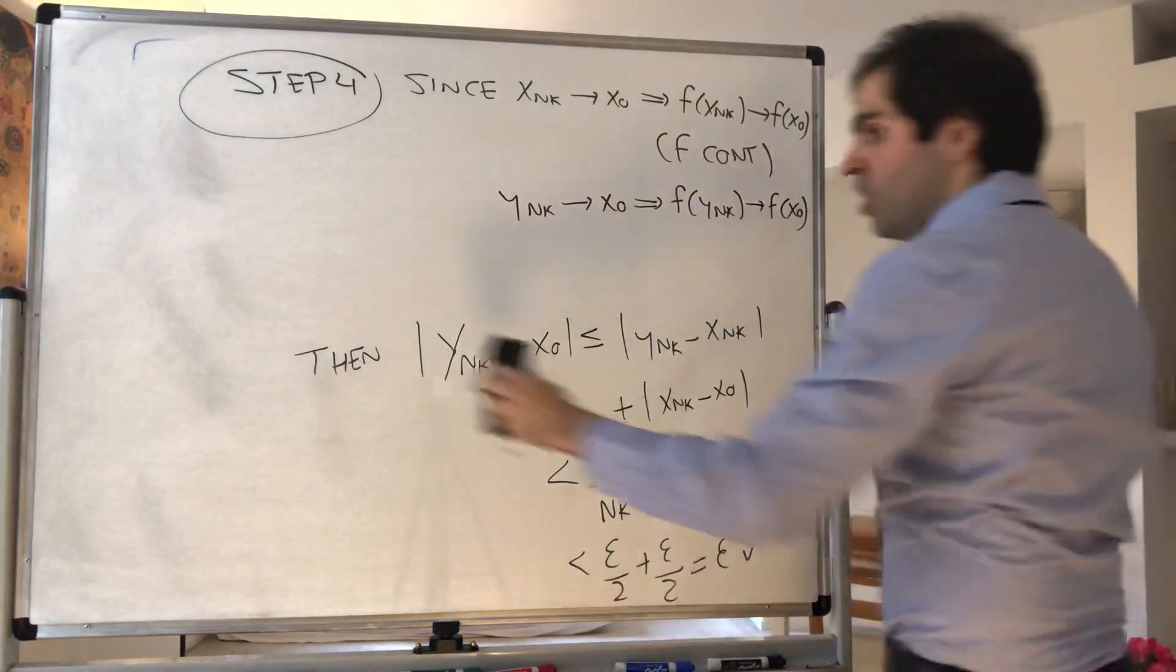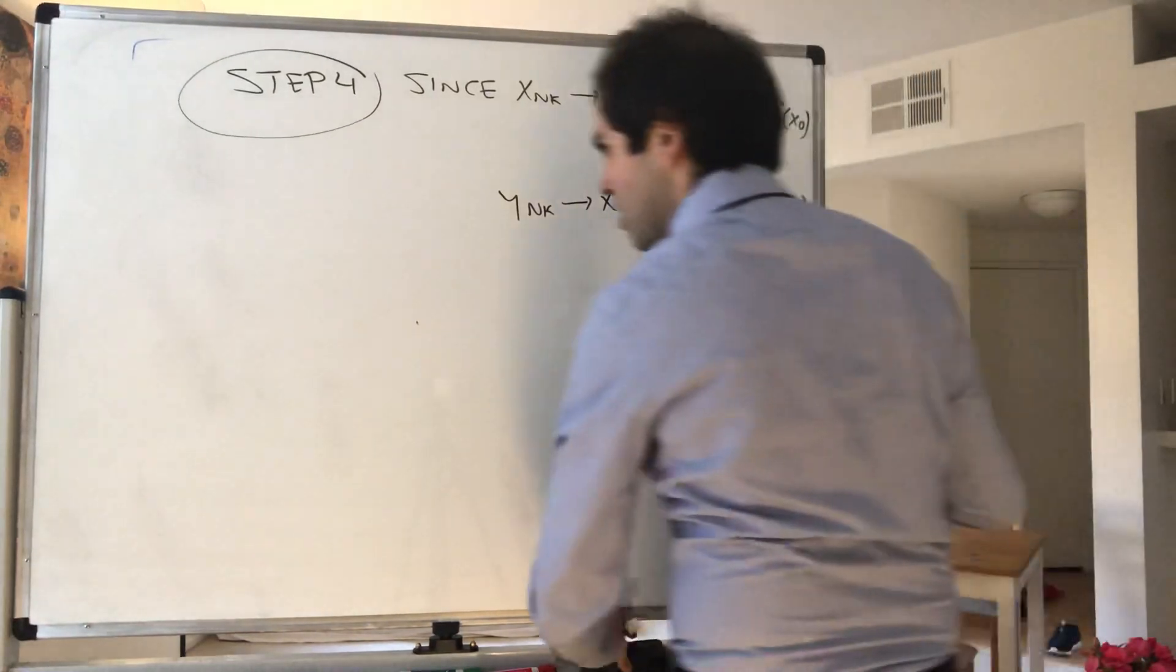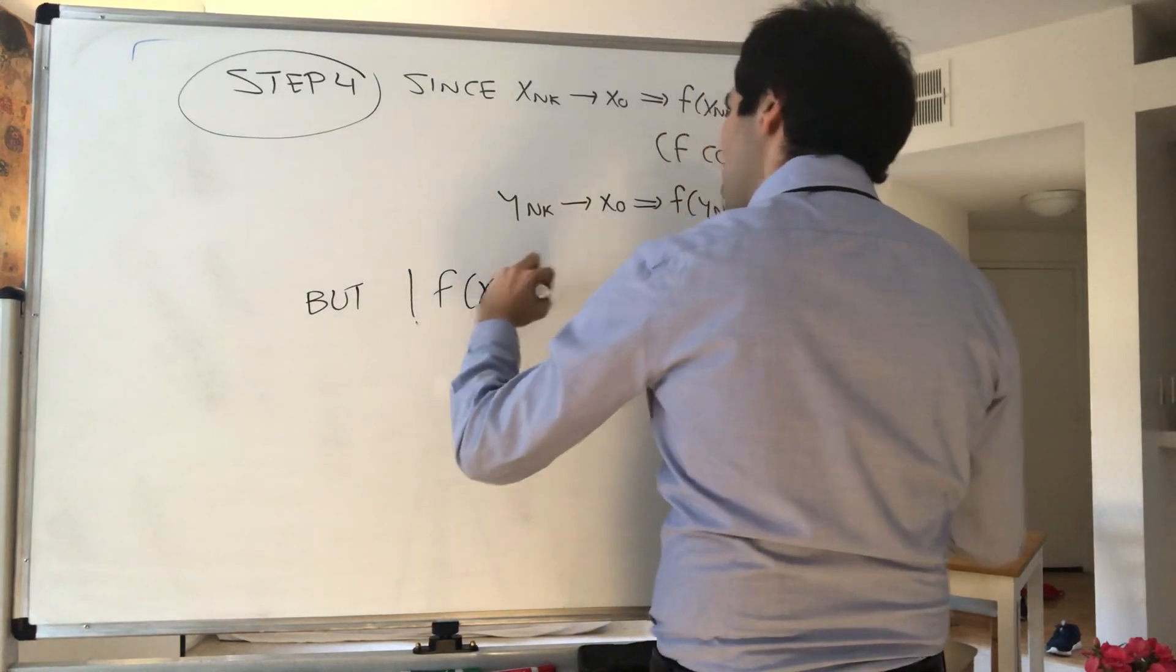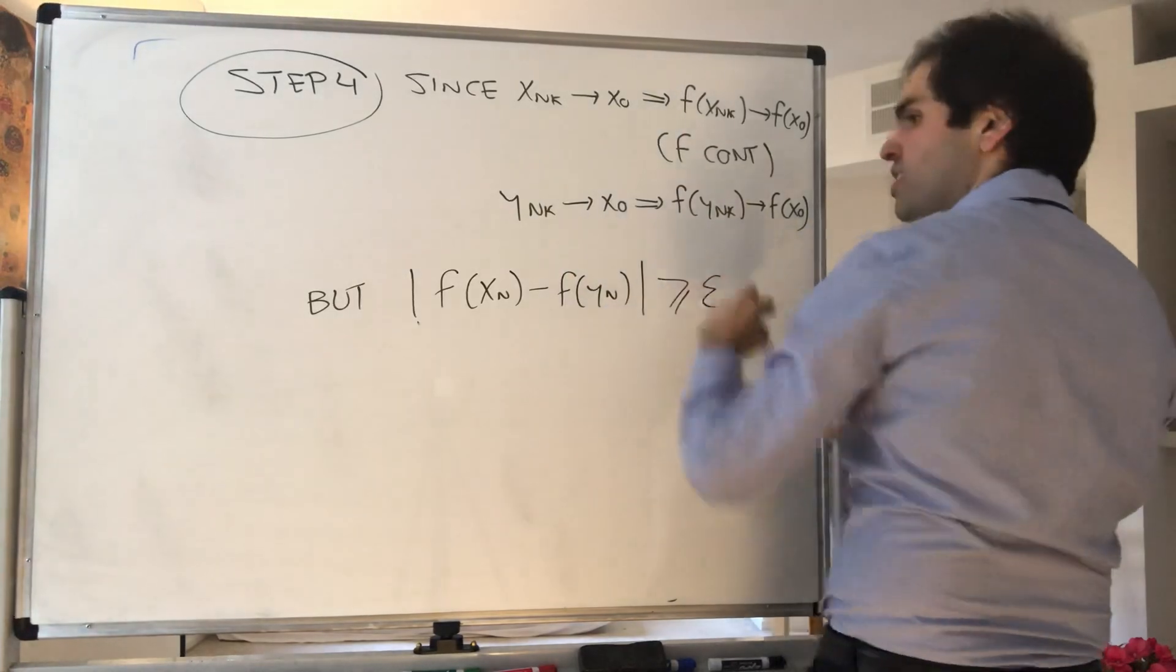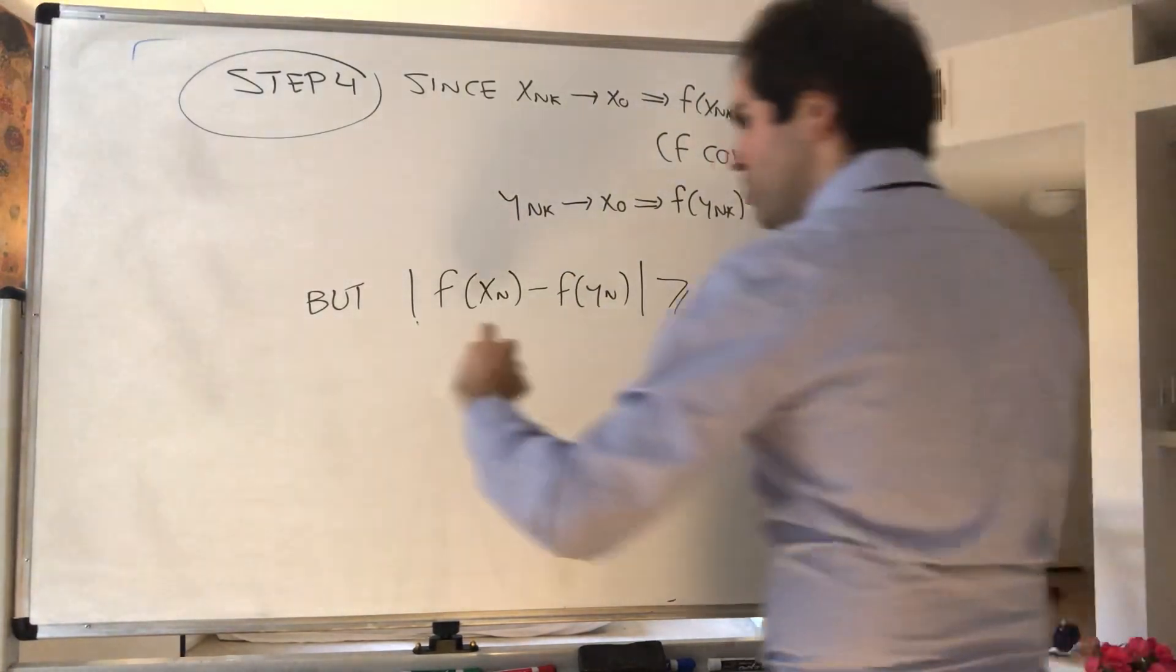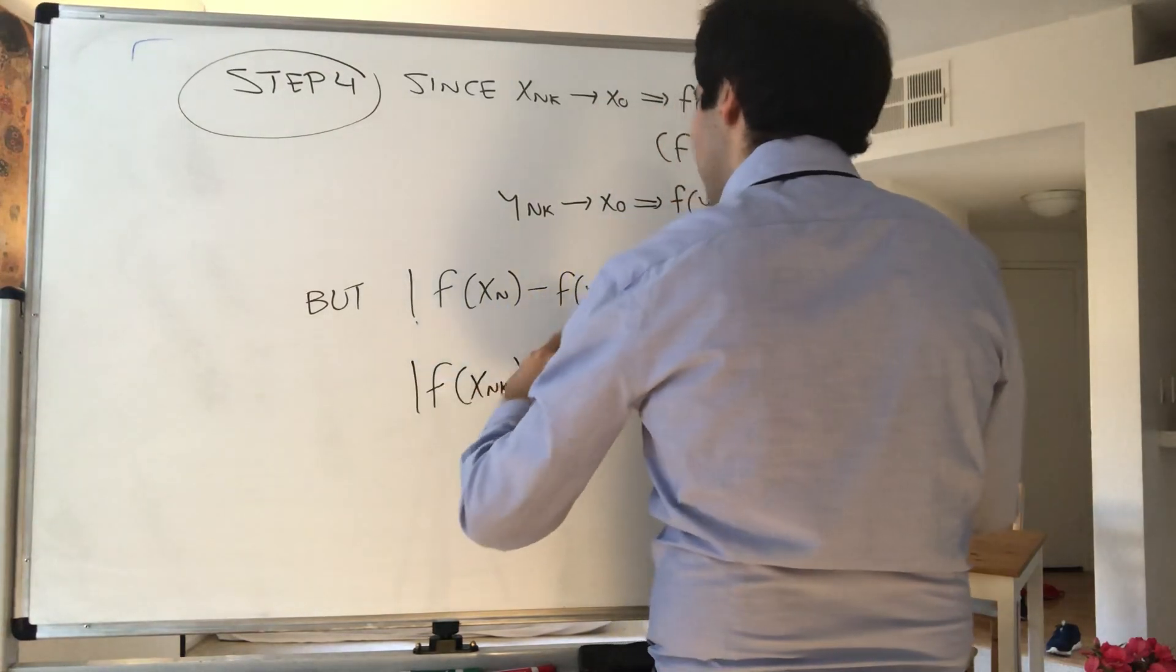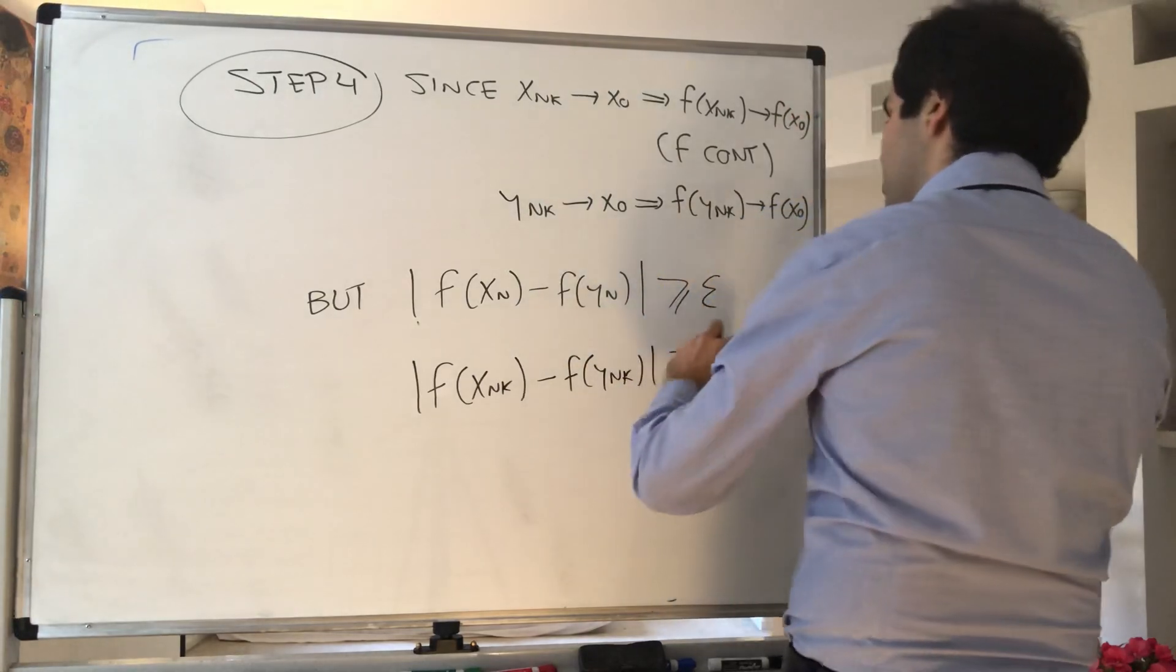But then, look at the difference. So there's one thing we haven't used yet: we haven't used the fact that |f(xₙ) - f(yₙ)| ≥ epsilon. So in particular with the subsequence, |f(x_nₖ) - f(y_nₖ)| ≥ epsilon.